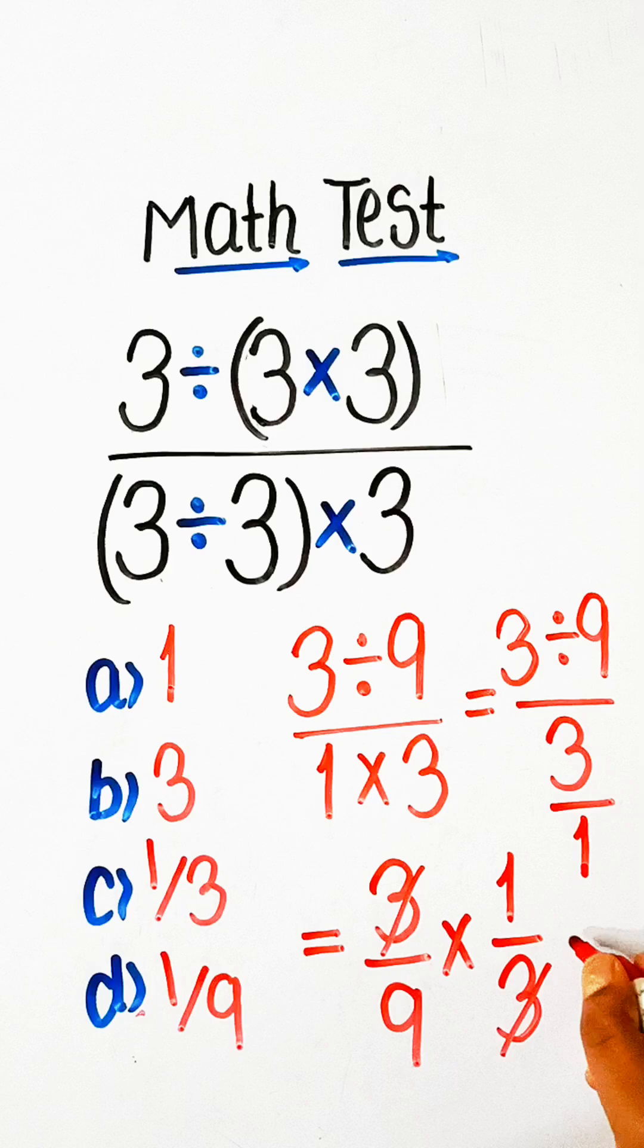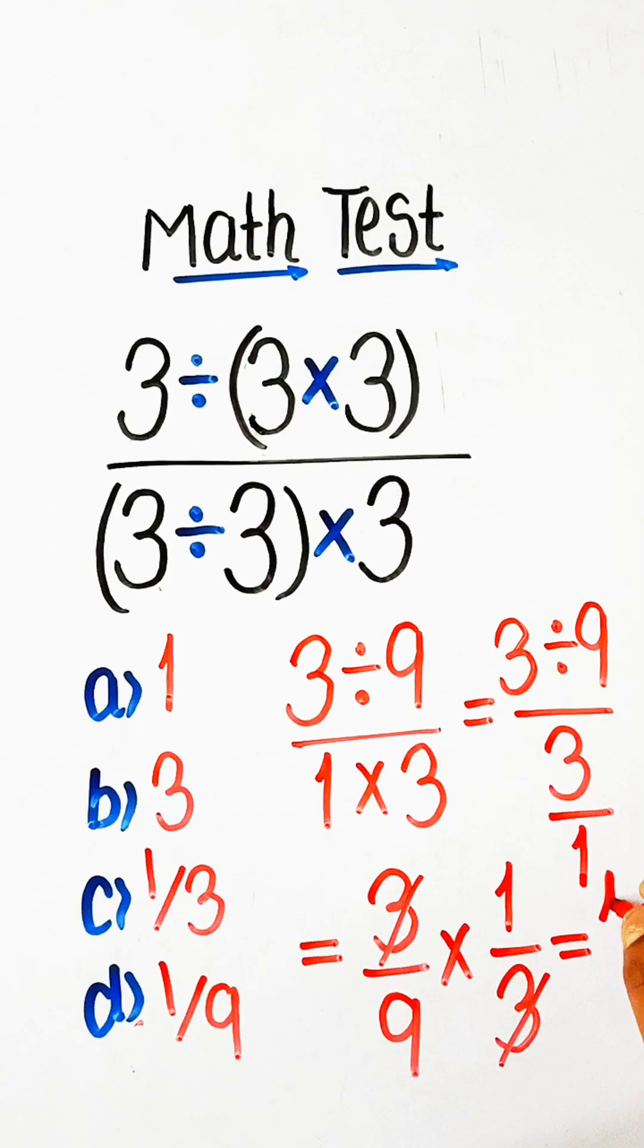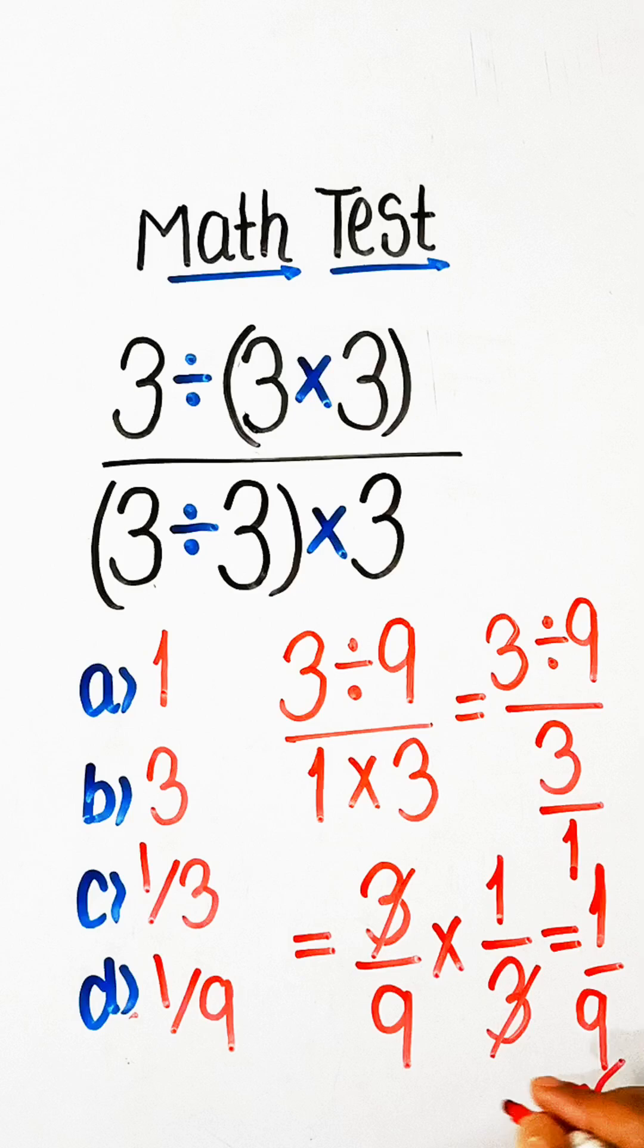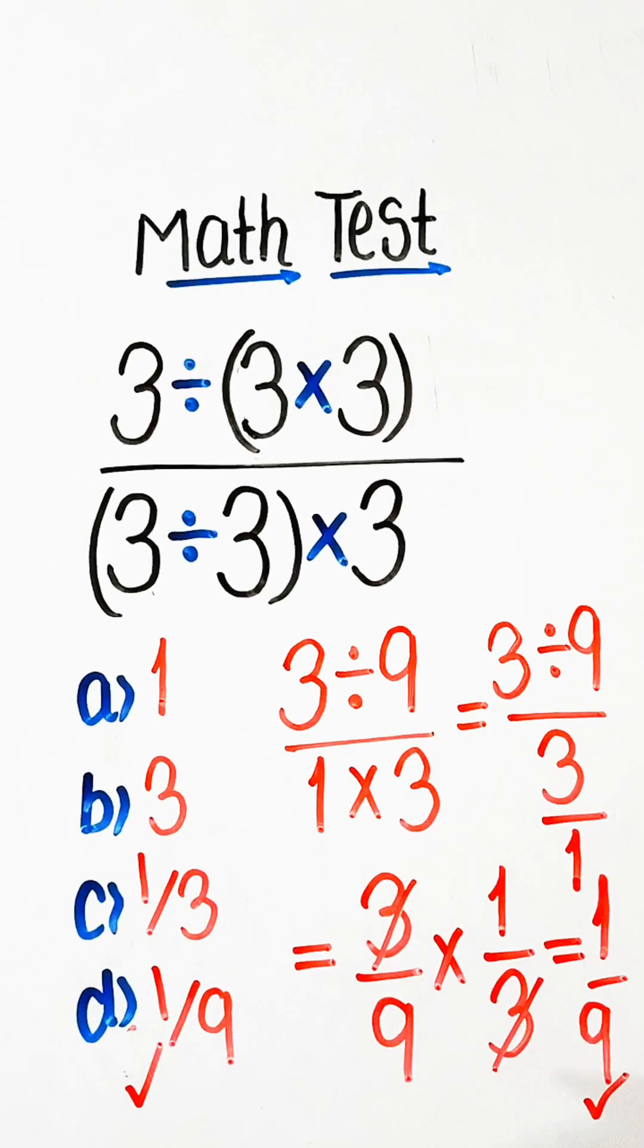Right answer here is 1 upon 9, so option D will be our correct answer.